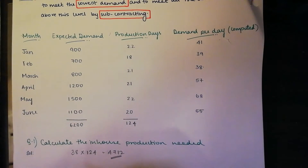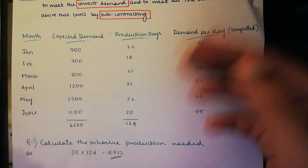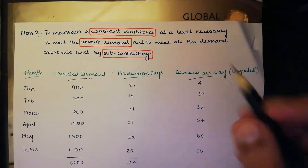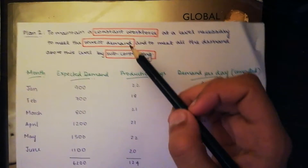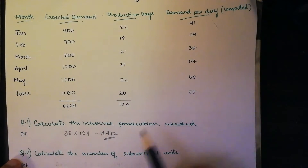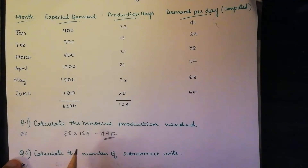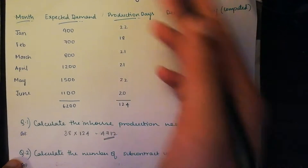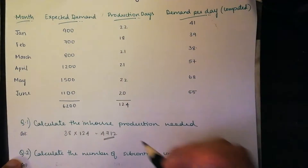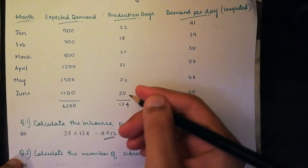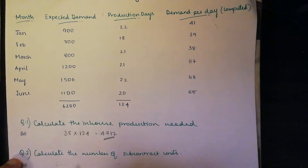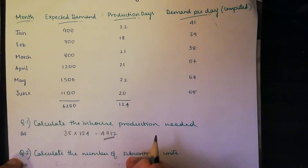Why 38? Because 38 is the lowest demand that we are trying to meet from our Plan 2 statement. And 124 because we need to be producing 38 units for the entire six months — for the entire 124 days that we will be operating. So that's going to be 4,712.